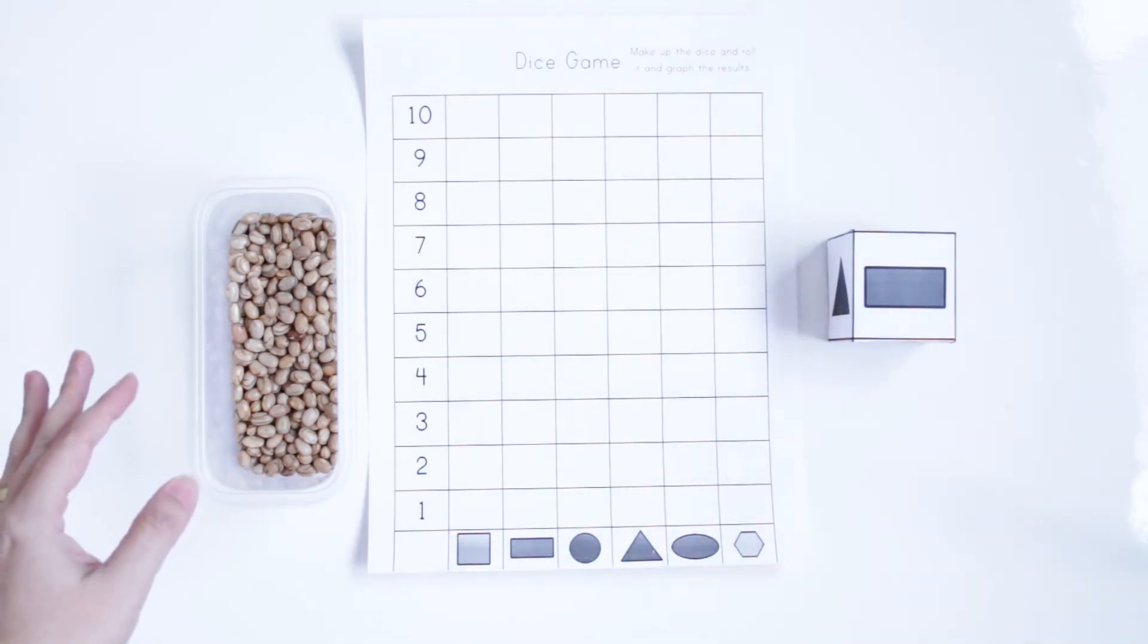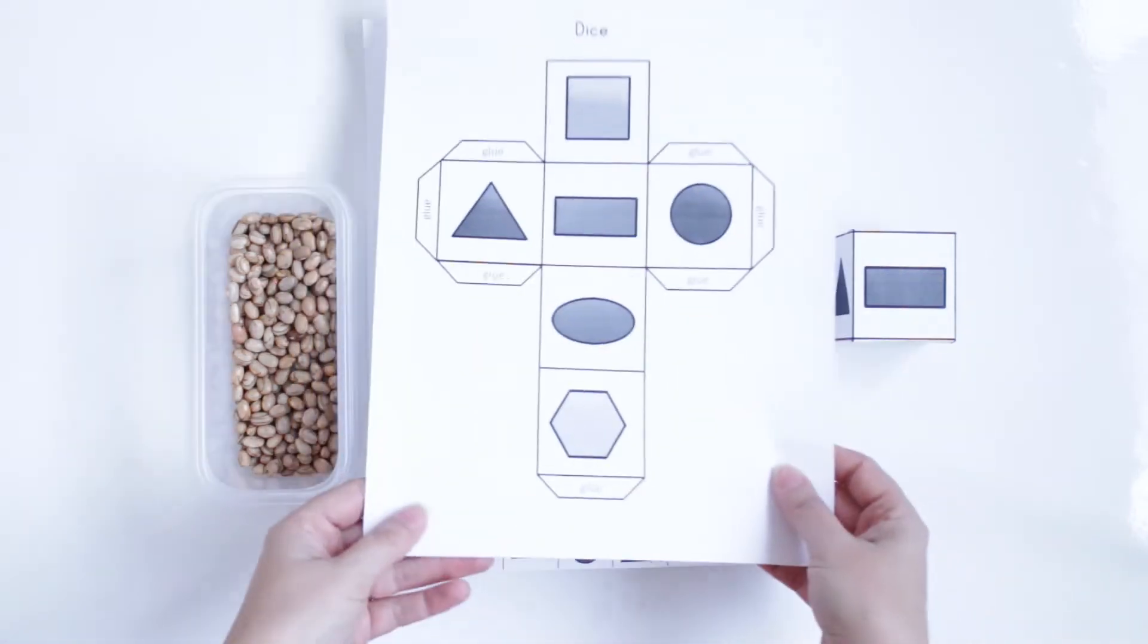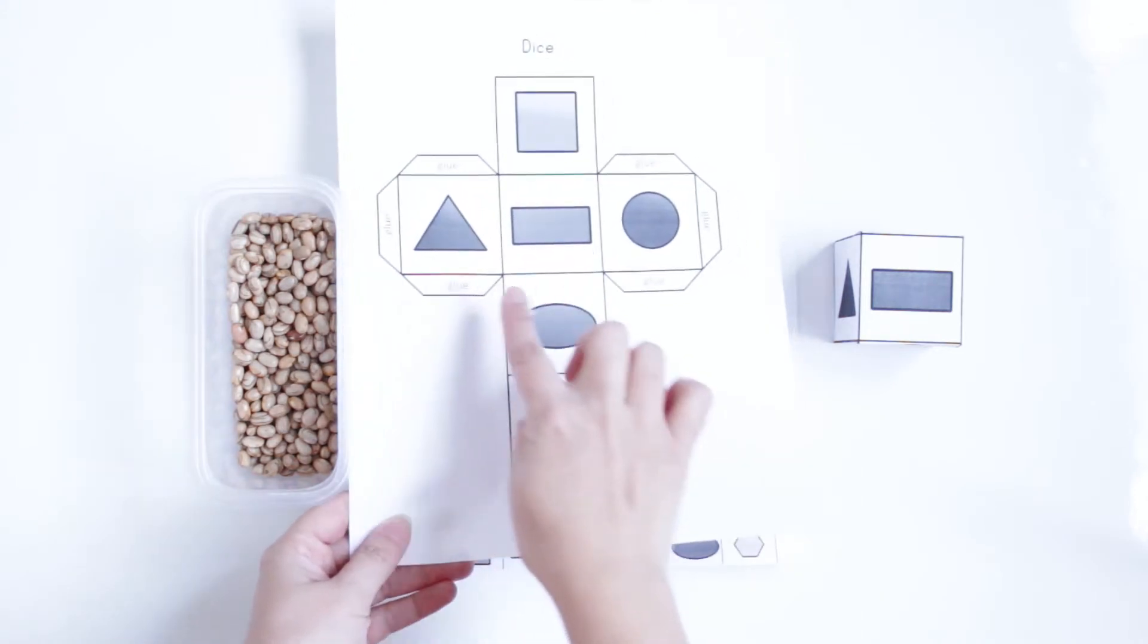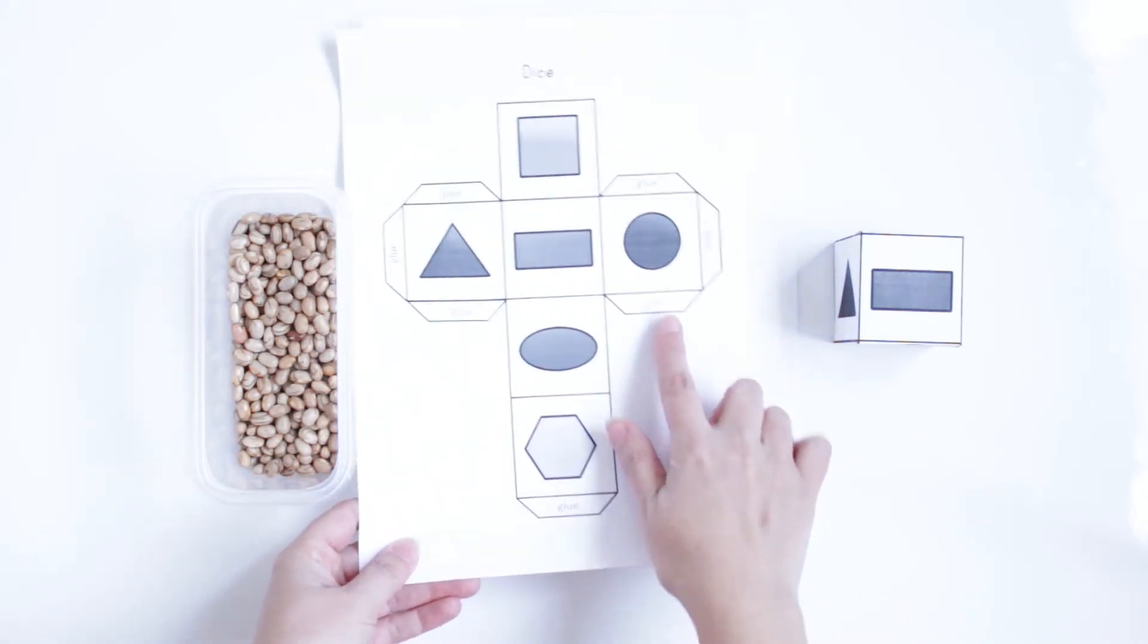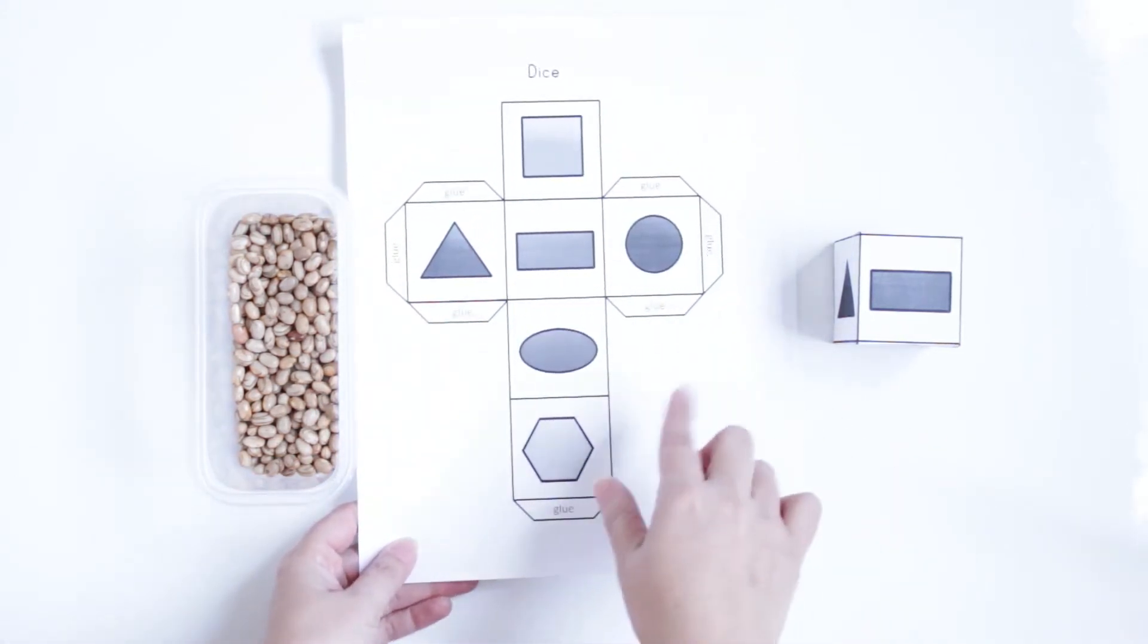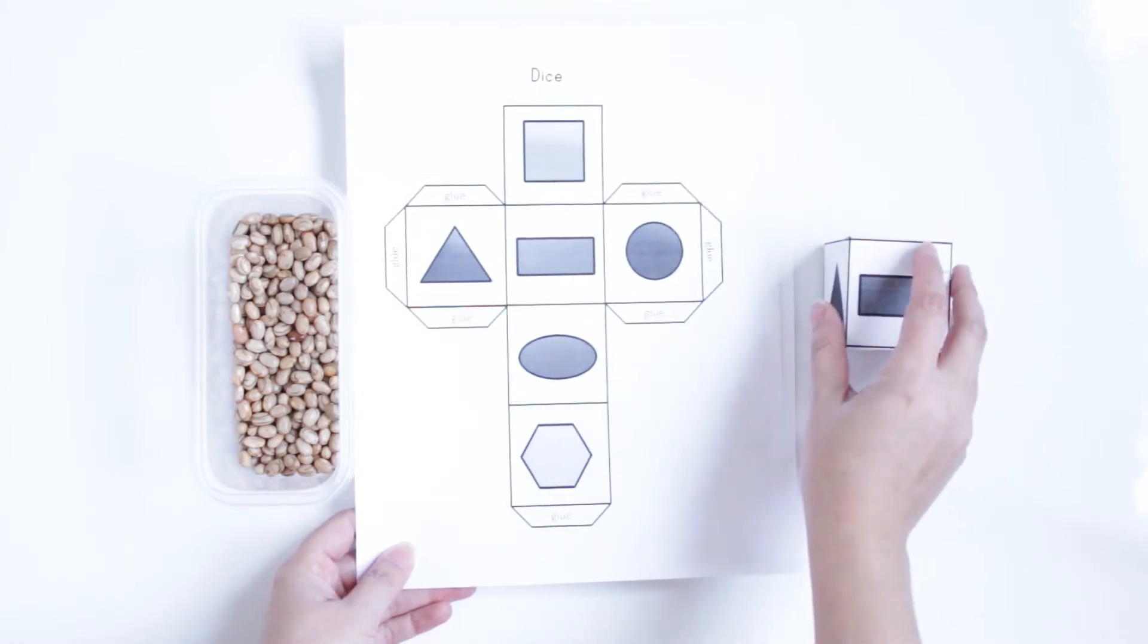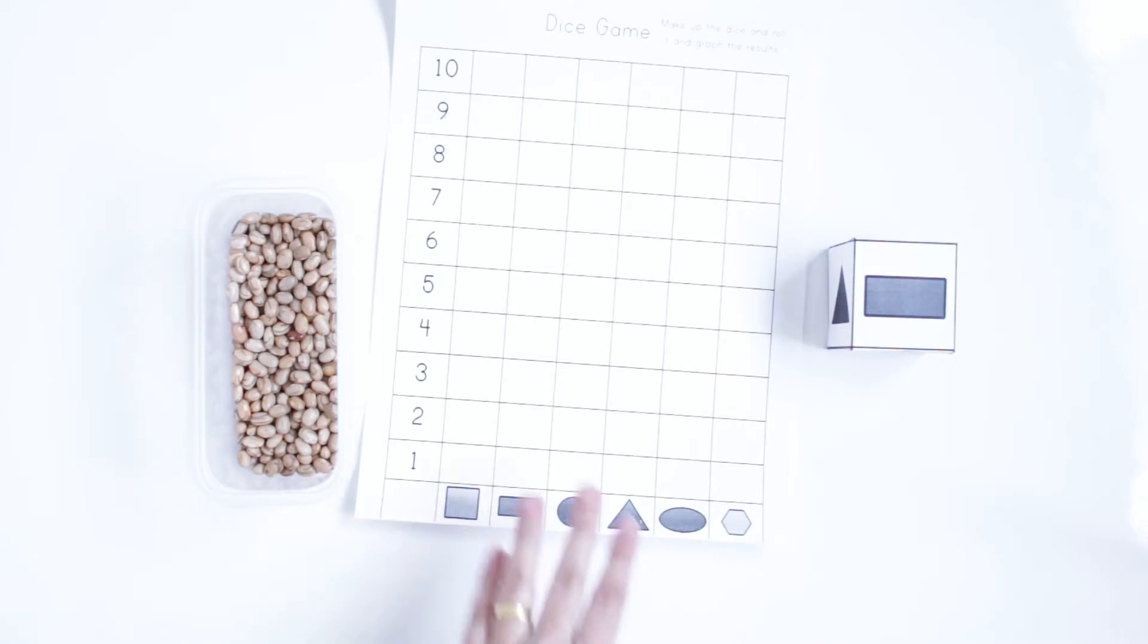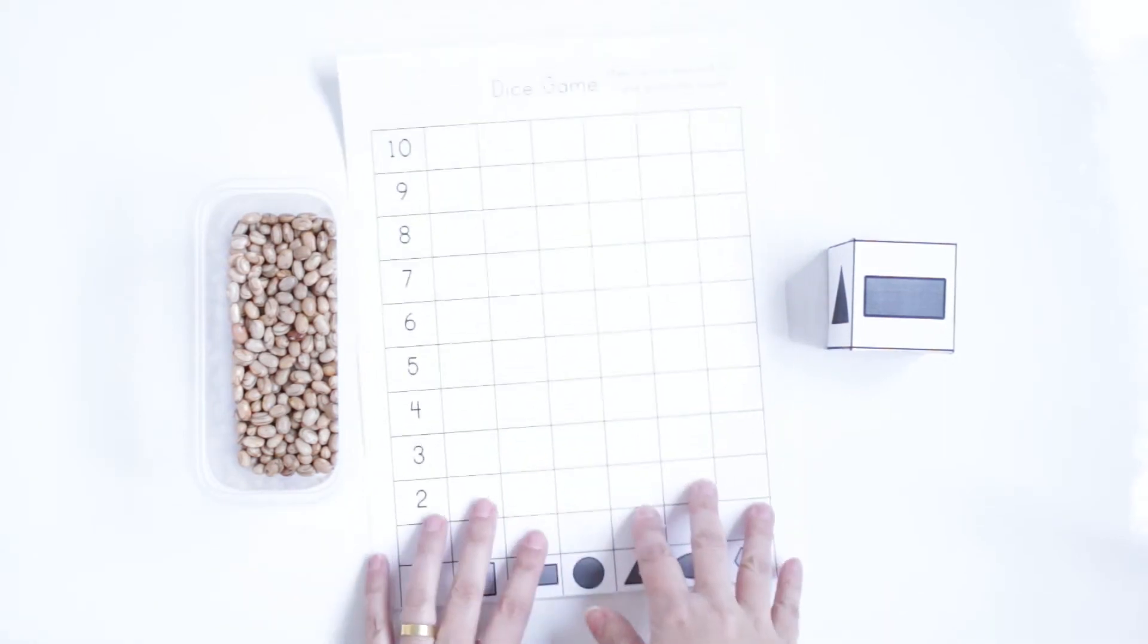Then you can use this file to cut and put glue in the correct place, cut correctly and then stick together to get this cube. And this sheet here for us to put the results.